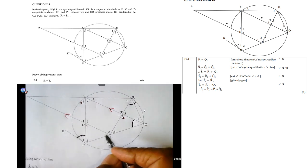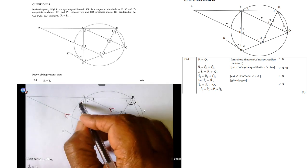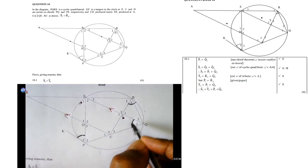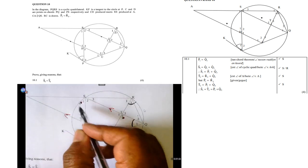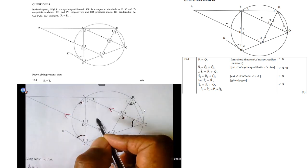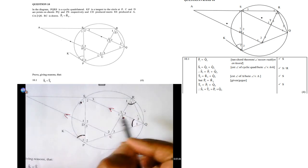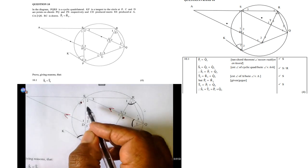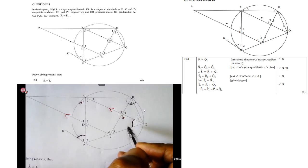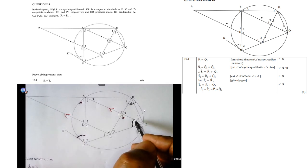Then angle S1, this S1 here, is equal to Q1 plus Q2. Why? It is the exterior angle of the cyclic quadrilateral. Remember, the exterior angle equals the opposite interior angle. So therefore, S1 is then the same as P1 plus Q2.